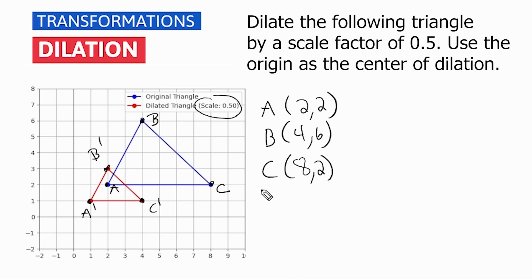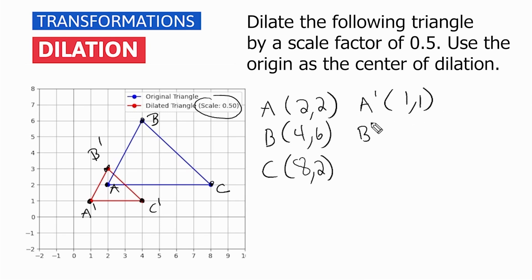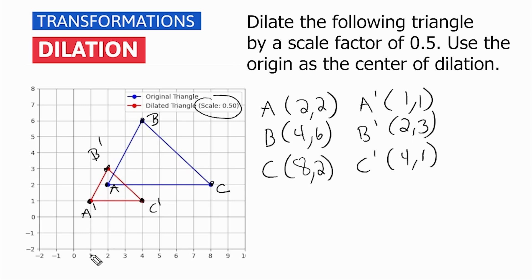Now, if you did not have the benefit of graphics and were just given a set of coordinates and had to dilate this figure by a scale factor of 0.5 using the origin as the center of dilation, all you would do is cut each one of these values in half. So the new point A is going to be located at (1, 1). The new point B is going to be located at (2, 3). And point C is going to be located at (4, 1). Let us verify these coordinates: the new point A is at (1, 1) — that matches. New point B is at (2, 3) — correct. And C is at (4, 1) — also correct.